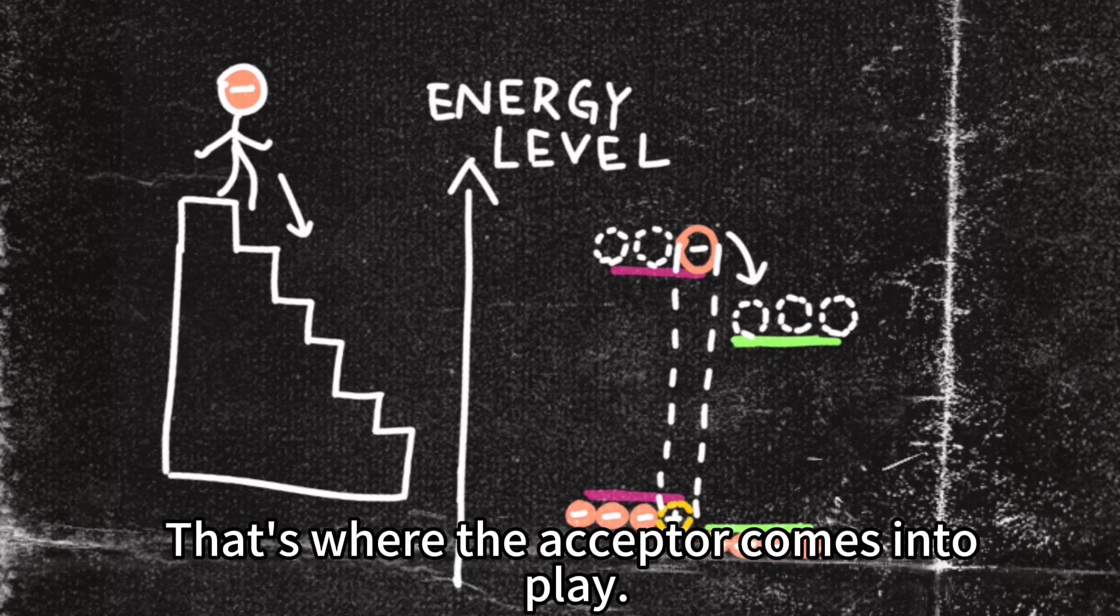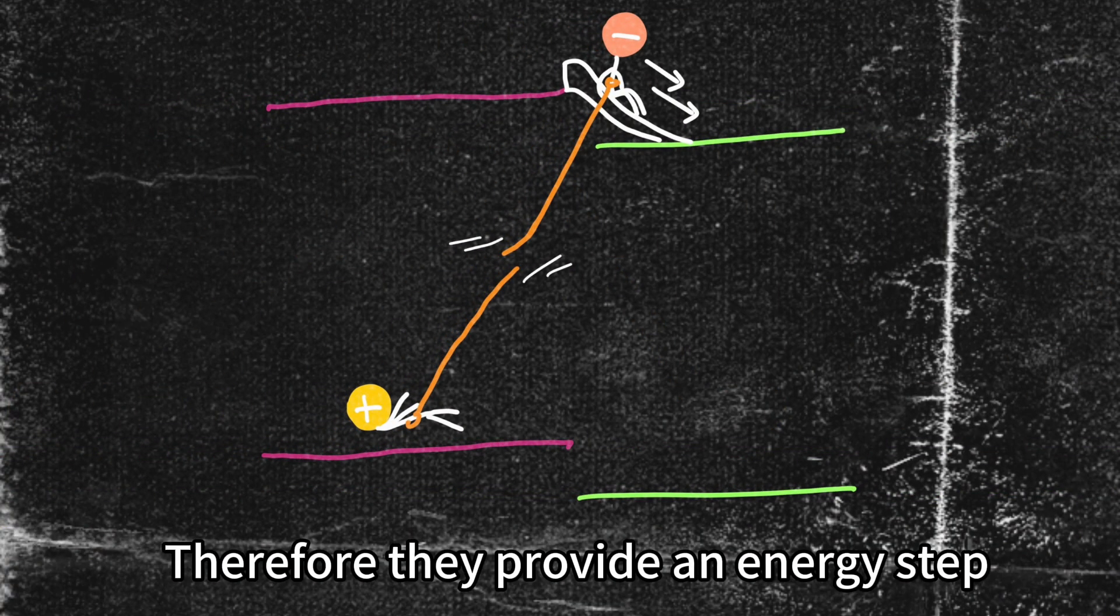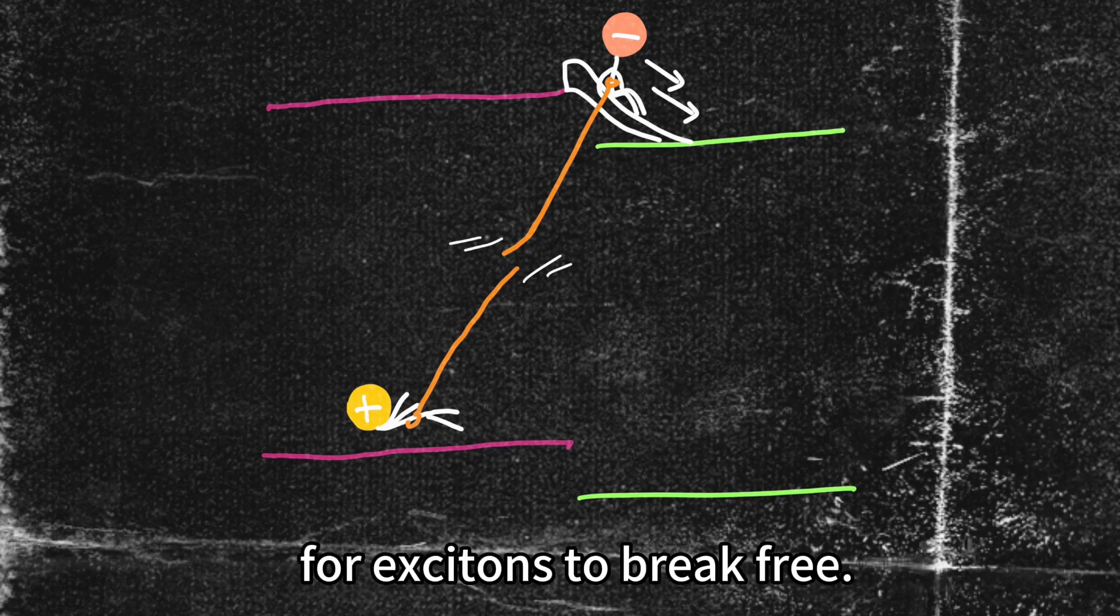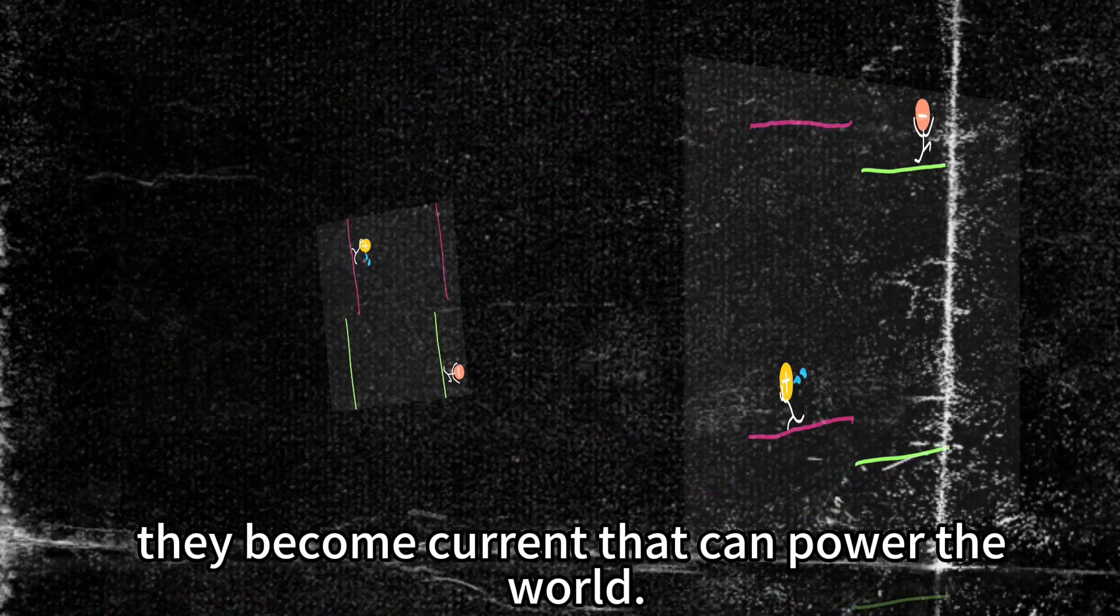That's where the acceptor comes into play. They usually have overall lower energy levels. Therefore, they provide an energy step for excitons to break free. Once they're free, they become current that can power the world.